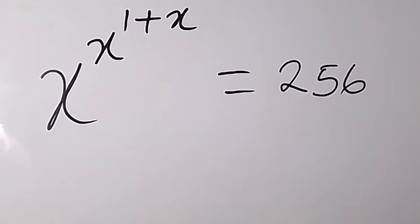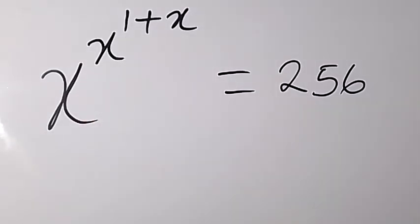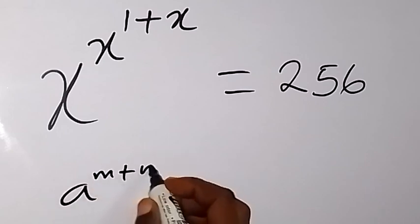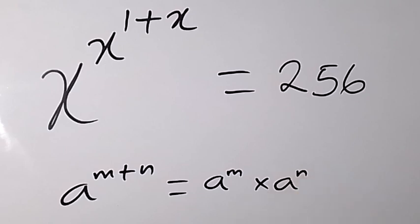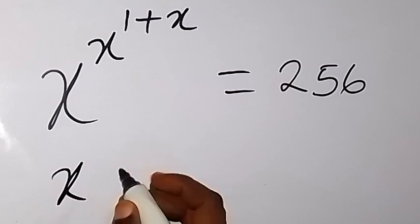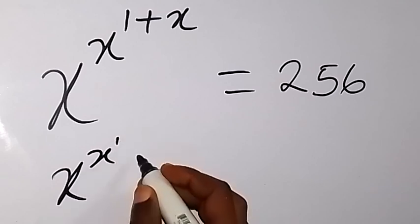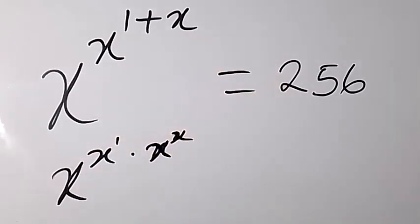There is something interesting here that we need to know. When we have a power like this and they're added up, we can separate it using the law of indices. When we have something of the form a raised to power m plus n, we can break it down as a raised to power m times a raised to power n. Applying that here, we can say we have x raised to power x, then times x raised to power 1.